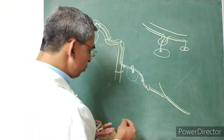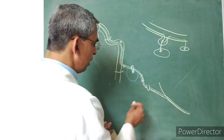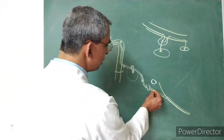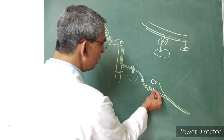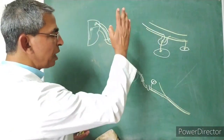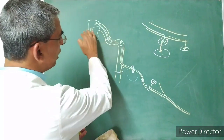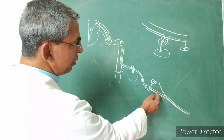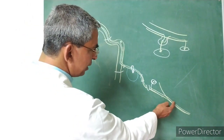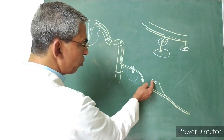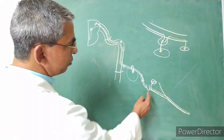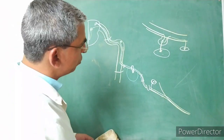The chorda tympani also communicates with the otic ganglion. This is an alternate pathway: when the chorda tympani is damaged, taste sensation fibers can still pass through the otic ganglion and enter the lesser part of the nucleus of the tractus solitarius. So this is the alternative pathway for taste sensation from the anterior two-thirds of the tongue.